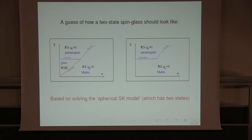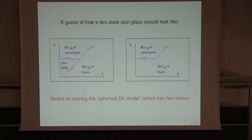Doing a replica calculation for a droplet model seems oxymoronic at least, but one thing one can try is to do it for a model that has two states and see what it gives. And what it gives for this model — I am making a leap of faith — is that it would seem, and I'm not sure at all, that this transition is absent: you only have the MATIS and the paramagnet, and the actual transition in replica number is flat on to N equals zero. This reminds a lot of the Almeida-Thouless line going away.